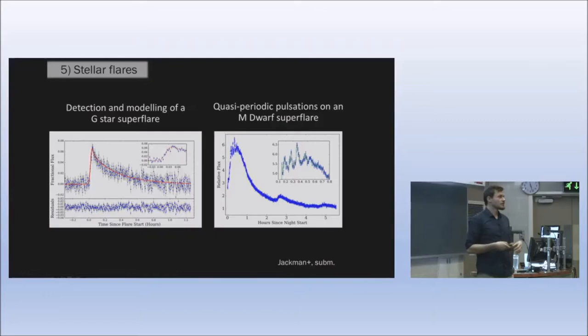Finally, we can look at stellar flares, which are explosive magnetic outbursts of the star. We can detect and model, for example, G star superflares. If anybody is familiar with the Carrington event in 1859 that caused a big outage of our electricity system and telegraph lines back then.